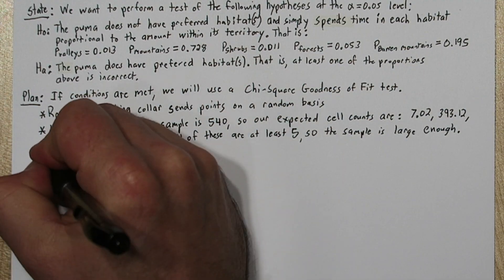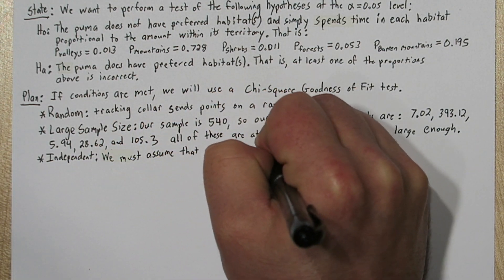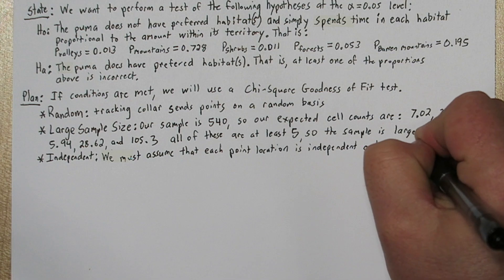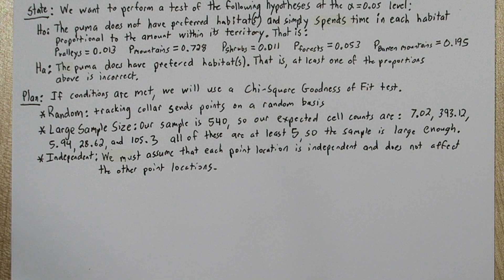So our sample is large enough. For the independent condition, we must assume that each point location is independent and does not affect the other point locations. And depending on how long this study was conducted, and how quickly the puma moves around, this may or may not be met.